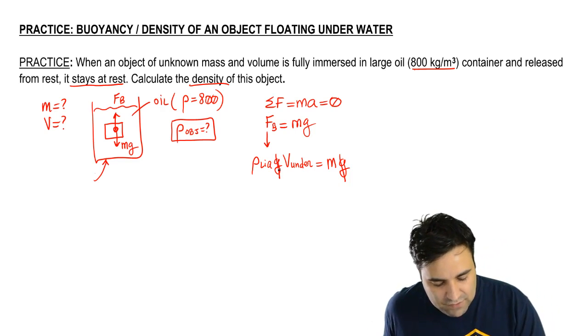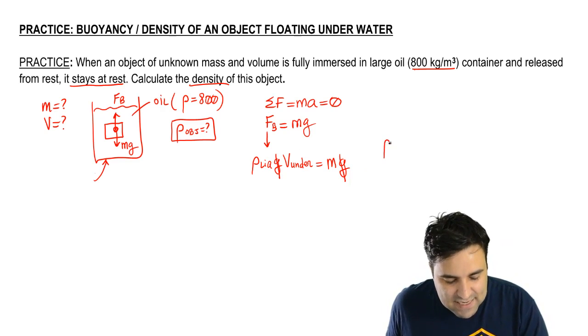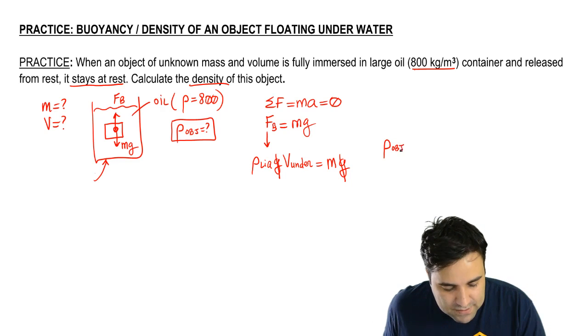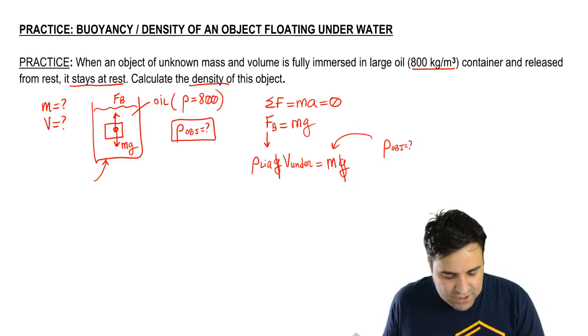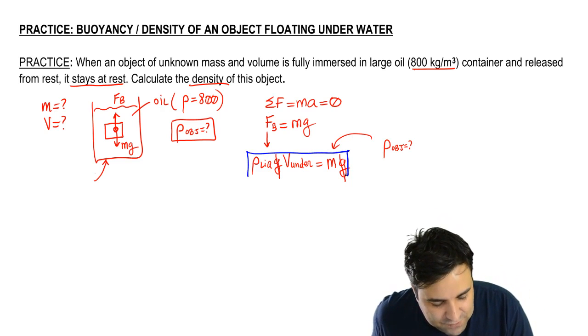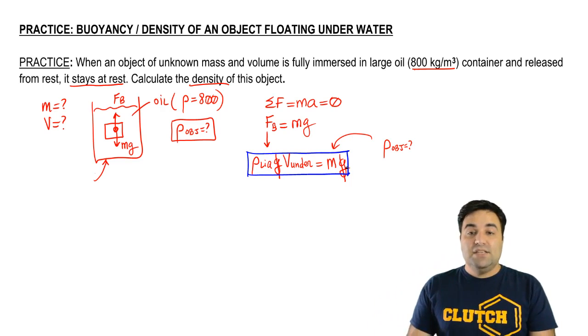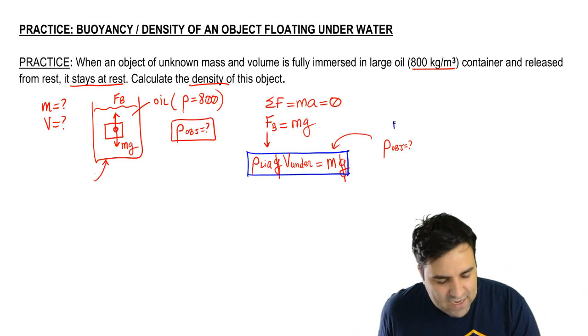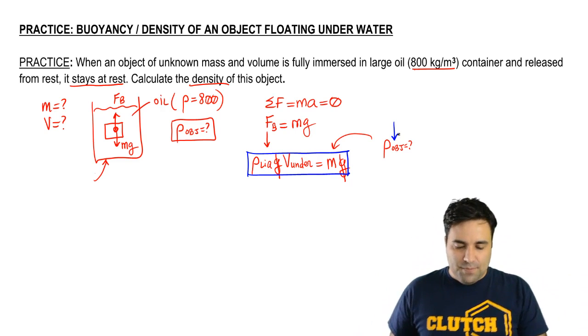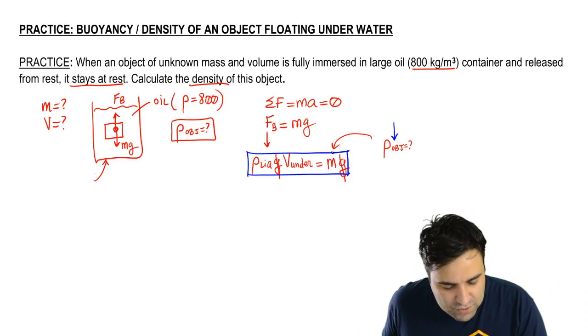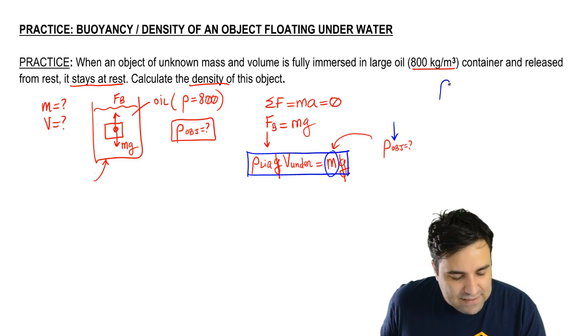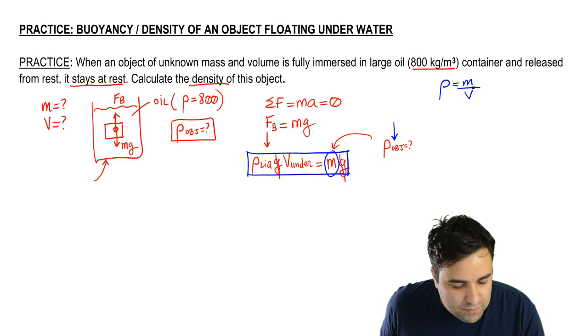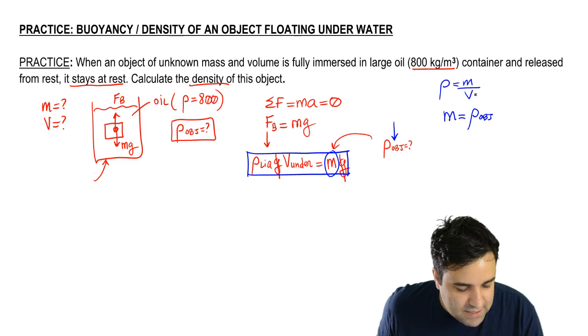And now we are looking for density. Notice that density is not in this equation, at least not initially when you look at it. So what you have to do, and this is going to show up a lot, is you're going to have to make it show up. You're going to have to rewrite one of the variables so that row object shows up. So you're going to typically rewrite M because remember, density is mass over volume. Therefore, mass is density of the object times volume total.